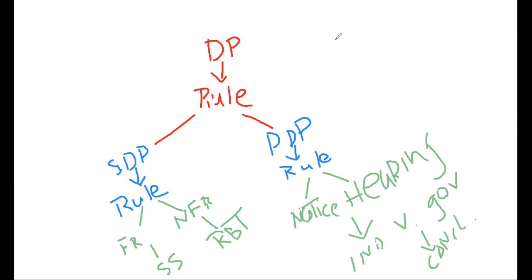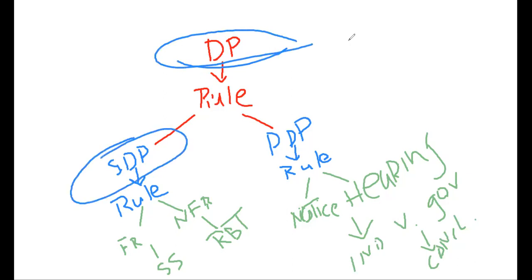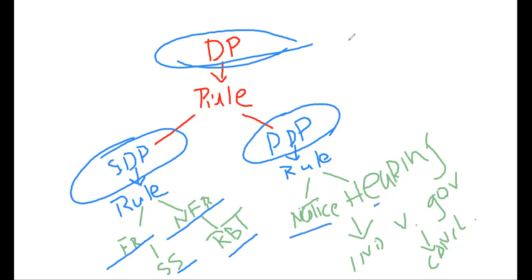So that's pretty much it — easy, quick, and fast. Due process: go into your simple rule, spread it apart. Is it substantive due process first? Is there a fundamental right or not? Fundamental rights involve strict scrutiny; non-fundamental rights use the rational basis test with the burden on the challenger. PDP: give the rule, do notice and hearing, then balance the individual versus the government, and make your conclusion.